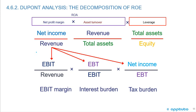We can take the decomposition even further. Net income over revenue — the net profit margin — can be broken down into: EBIT over revenue (the EBIT margin), times earnings before tax over EBIT (the interest burden), times net income over earnings before tax (the tax burden). Canceling out EBIT and EBT brings us back to net income over revenue. This further decomposes the net profit margin. I haven't seen many calculation questions at this level, so it's more of a nice-to-know.